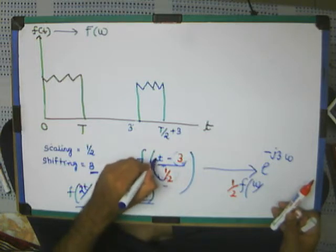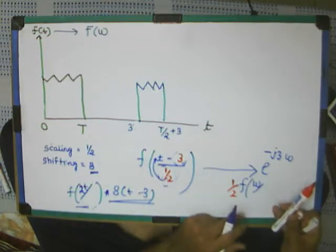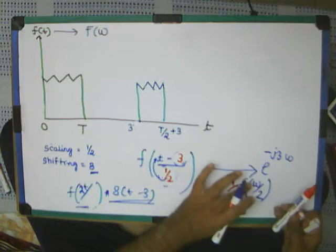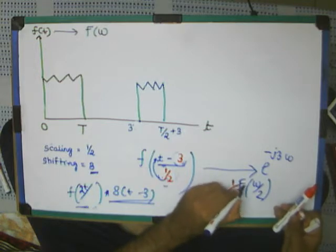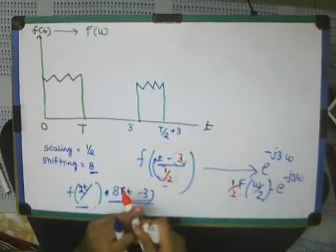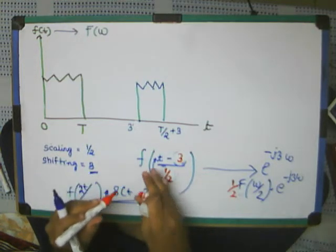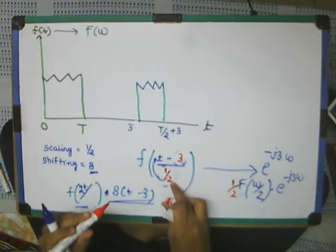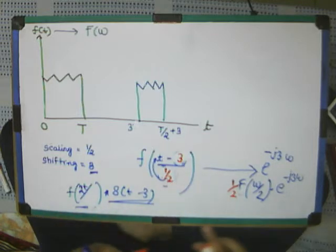So this half half, this becomes actually 2 times. So this goes in the numerator. In time, this goes in the numerator. In frequency, it comes in denominator. Capital F of omega by 2 e raise to the power minus J3 omega. So if you convert anything in T minus some shifting parameter by scaling parameter, then you can easily find the Fourier transform.